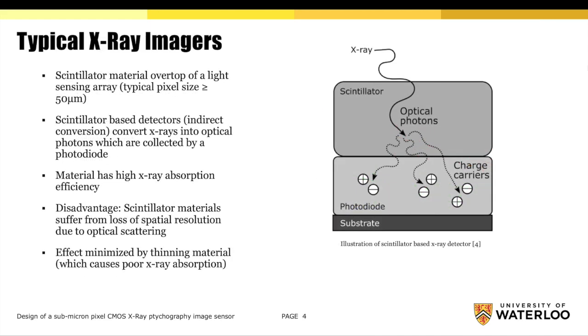X-ray imaging devices usually incorporate a light sensing array and an x-ray sensitive scintillator material. These scintillator-based detectors convert x-ray photons into optical photons, and these optical photons are then collected by a photodiode.